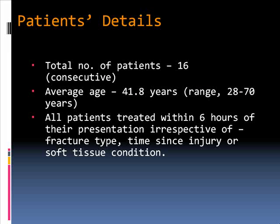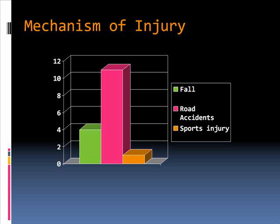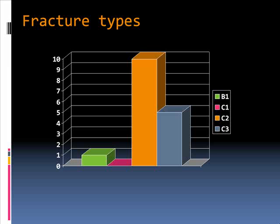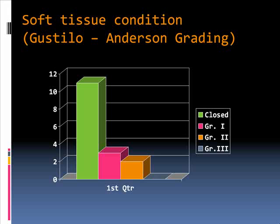In our series we treated 16 consecutive fractures with this method. The average age was 41.8 years, and all patients were treated within six hours of presentation, irrespective of fracture type, time since injury, or soft tissue condition — whether compound or not. The most common mechanism of injury was road traffic accidents, followed by simple falls. Most fractures in our series were type C2 or C3.